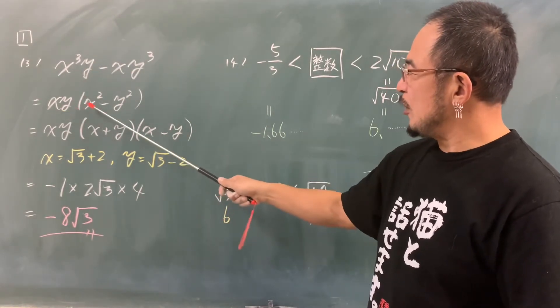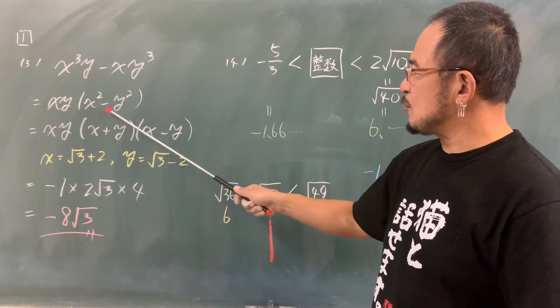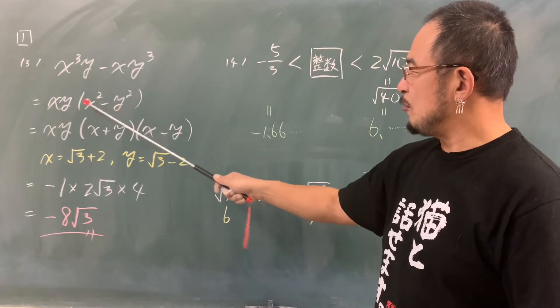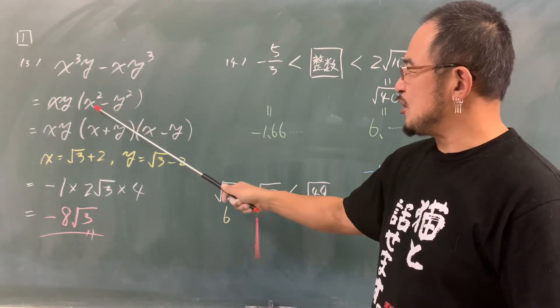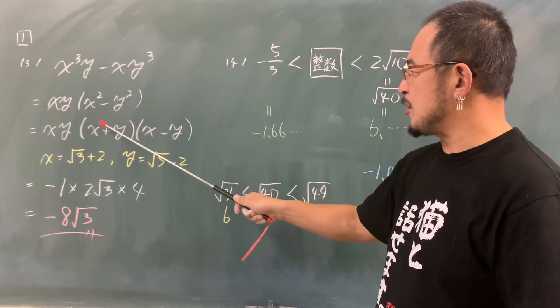カッコ3。まずは共通する因数xyを前に出します。そうするとx²-y²。これは和と差の積ですね。2乗-2乗は和と差の積。ここへ代入します。和と差の積で3。